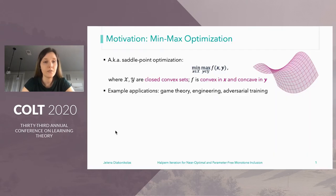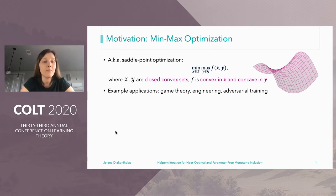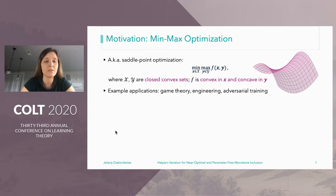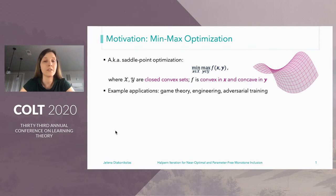The main motivation for this work are index-concave min-max optimization problems, also known as saddle-point optimization problems, as shown on the slide. There are many different applications of such problems, such as in game theory, engineering, mathematical programming, and so on. Within machine learning, we most frequently use them to model adversarial training.